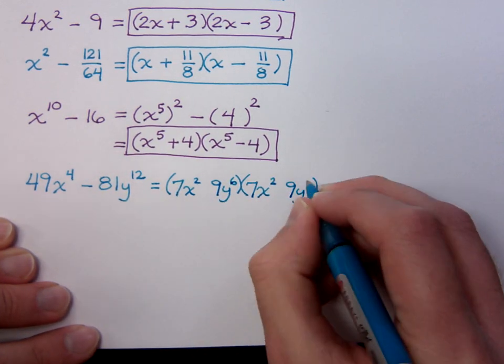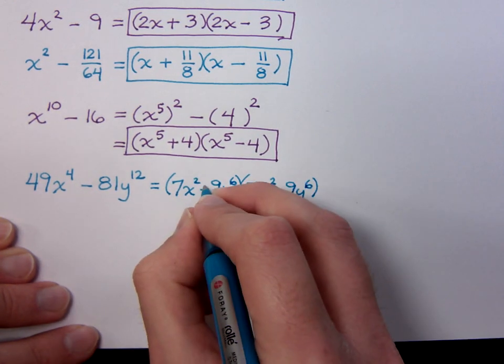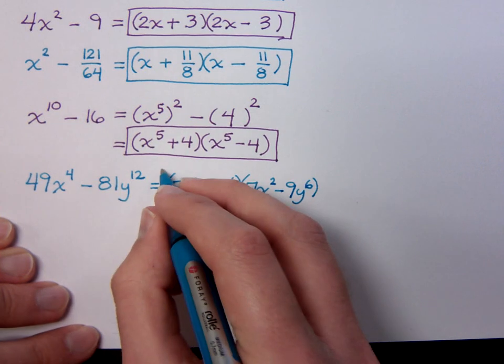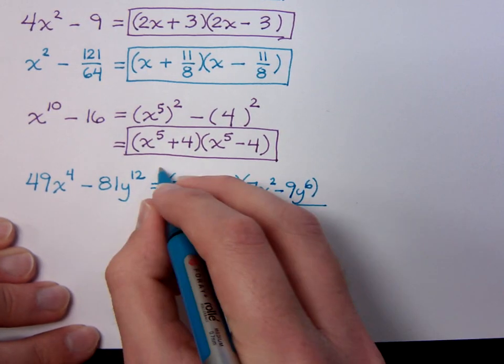So y^6 and y^6. And then, remember, we've got plus and minus. And that guy's done.